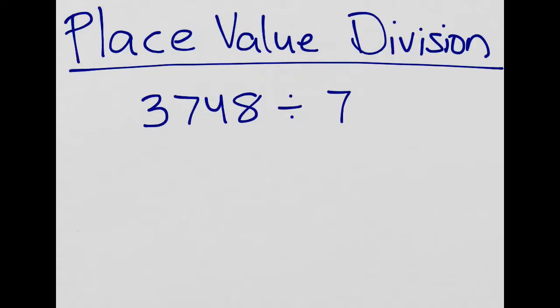When we use place value division, we look at each piece of a number and we divide it up into equal groups, which is what division is. Division is just taking an amount and breaking it up into equal groups.